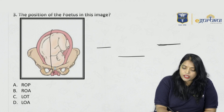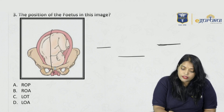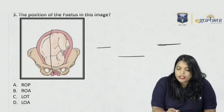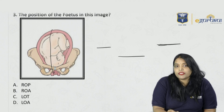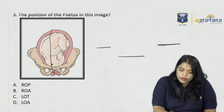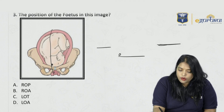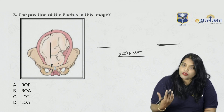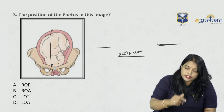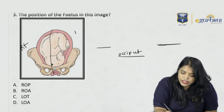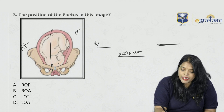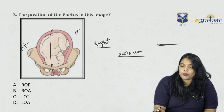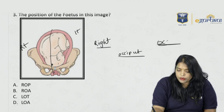This is a longitudinal lie with cephalic presentation and vertex as the presenting part. For vertex, the denominator is always occiput. Now, my right and patient's right are always opposite. So this is my right, which means this is the patient's left, and that is the patient's right. The occiput is facing towards the pubic symphysis but slightly to one side.